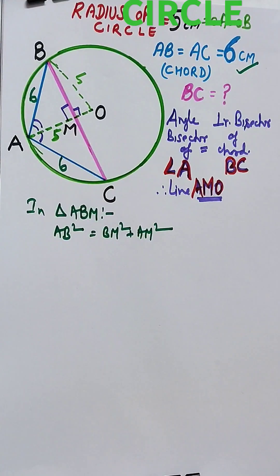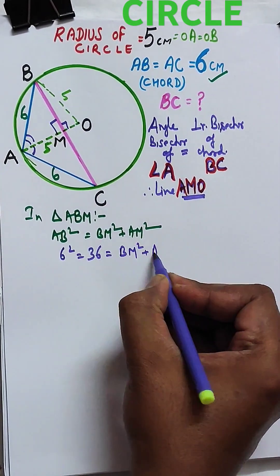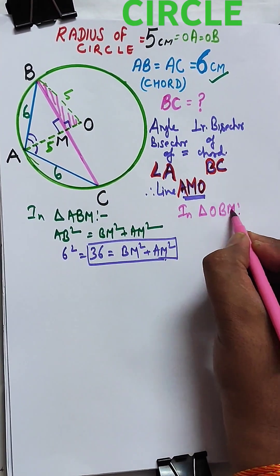In triangle ABM, by Pythagoras theorem, AB squared equals BM squared plus AM squared. So we get a relation in terms of BM and AM.